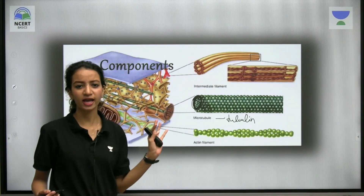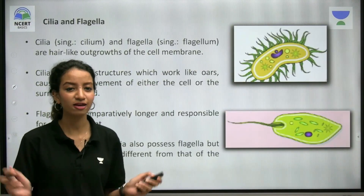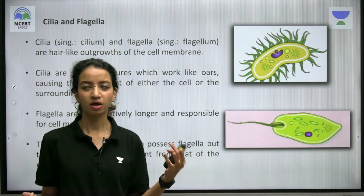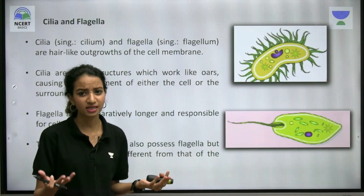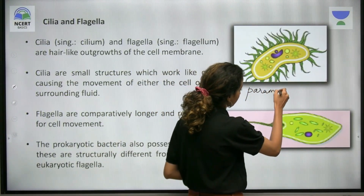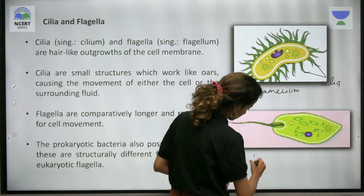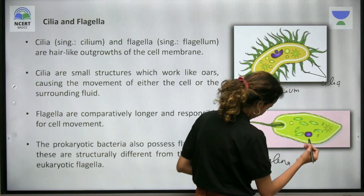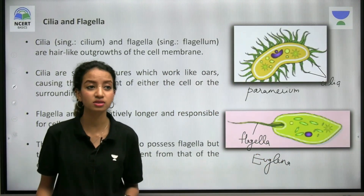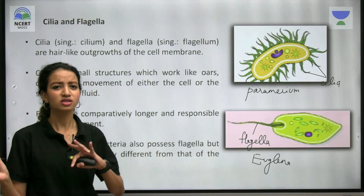Now we shall see cilia and flagella. Cilia and flagella are the locomotory structures which you can see in organisms. In paramecium you can see cilia, and in euglenoids you can see flagella. In prokaryotes like bacteria, flagella also exist, but the structure is quite different — we learned about the prokaryotic flagella structure with its basal body, hook, and filament. In eukaryotes, cilia and flagella are made up of microtubules, which are made up of tubulin protein.